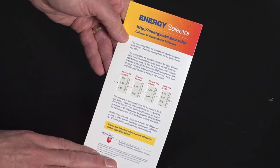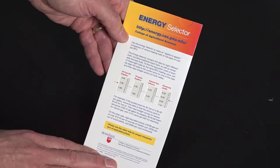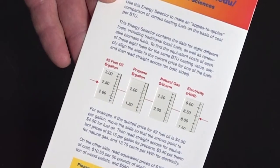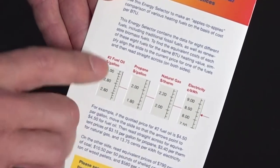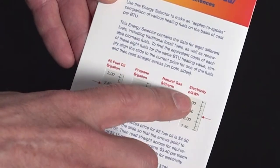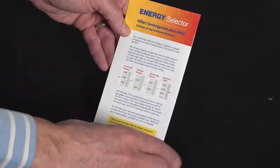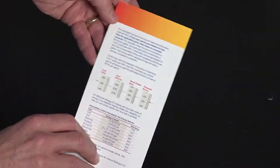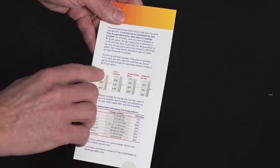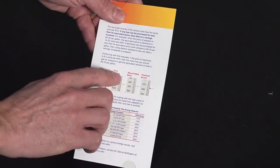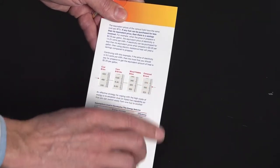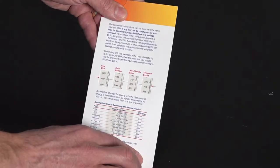The energy selector has four windows on each side of the card. Each window corresponds to a different heating fuel. In this case, we have fuel oil, propane, natural gas, and electricity on one side, and coal, corn, wood pellets, and firewood on the other side.